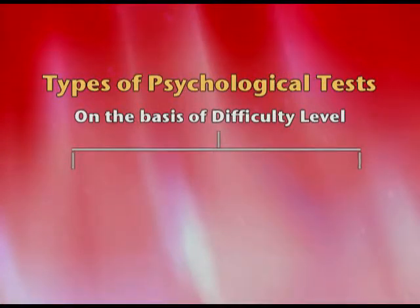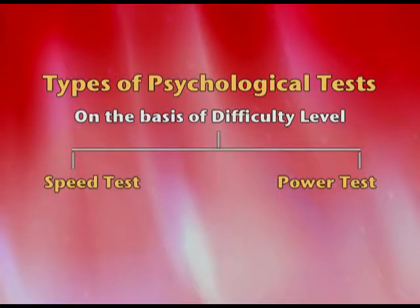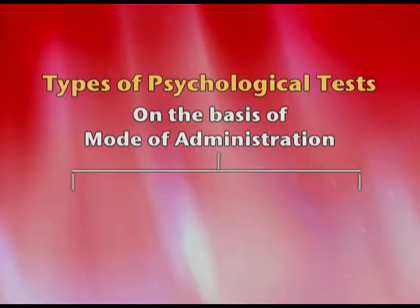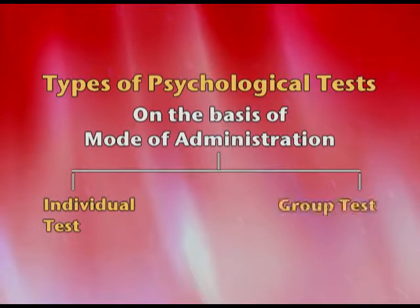Tests can also be classified by difficulty level and time limit. If a time limit is present, it is a speed test; if it emphasizes accuracy with increasing order of difficulty, it is a power test. Based on mode of administration, a test can be administered to one person or a group. The advantages of psychological testing include objectivity, reliability, and replicability — anyone can administer the test and get the same kind of results.